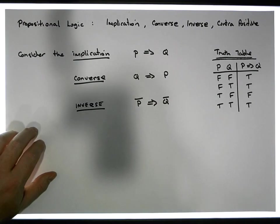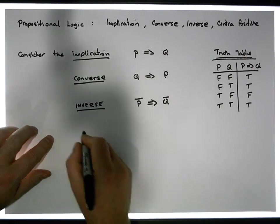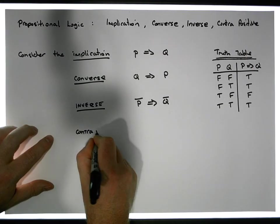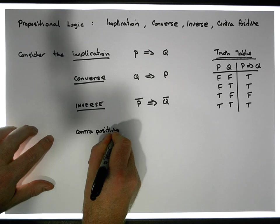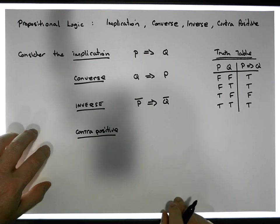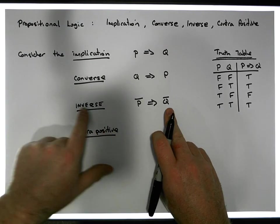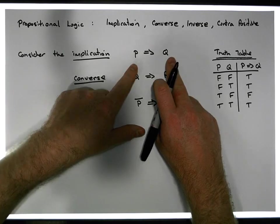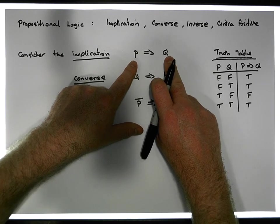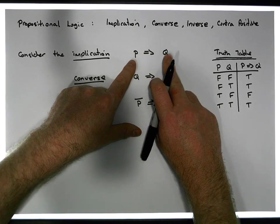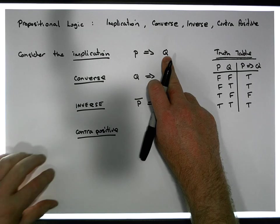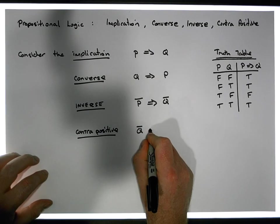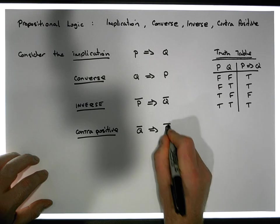And finally, what's known as the contrapositive of the original argument is where we take the inverse and flip them around — or alternatively, we create a new premise which is the old conclusion negated. So we have the negation of Q implies the negation of P.